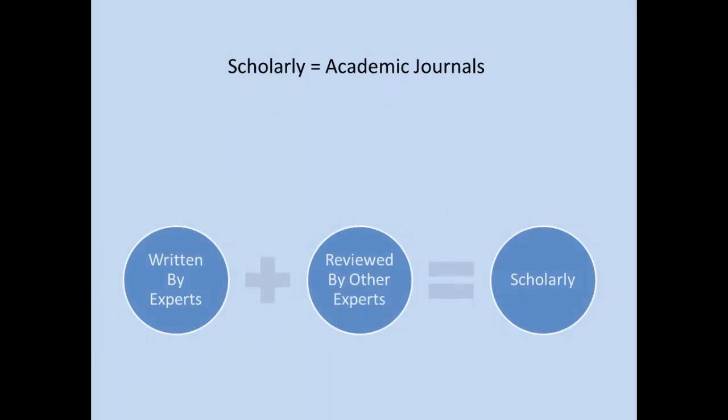Scholarly sources are found in academic journals, and sometimes these are called peer-reviewed articles. These articles are written by experts who have advanced degrees and are often associated with universities, and then the articles are reviewed by other experts.